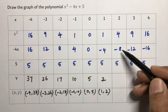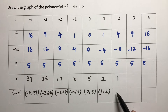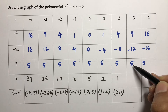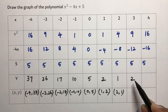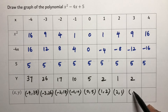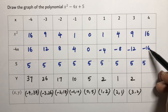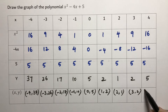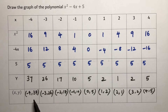For x = 1: 1 - 4 + 5 = 2, so y = 2. For x = 2: 4 - 8 + 5 = 1, so y = 1. For x = 3: 9 - 12 + 5 = 2, so y = 2. For x = 4: 16 - 16 + 5 = 5, so y = 5.